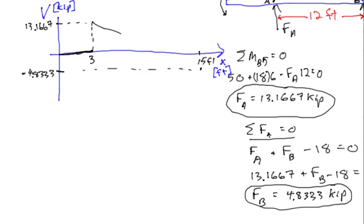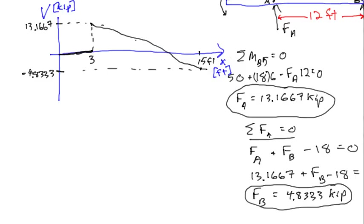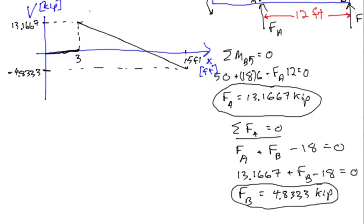So this section is just a straight line from 13.167 down to minus 4.8333. It's difficult to draw perfectly with these markers, but the line is straight. That takes care of V versus X.